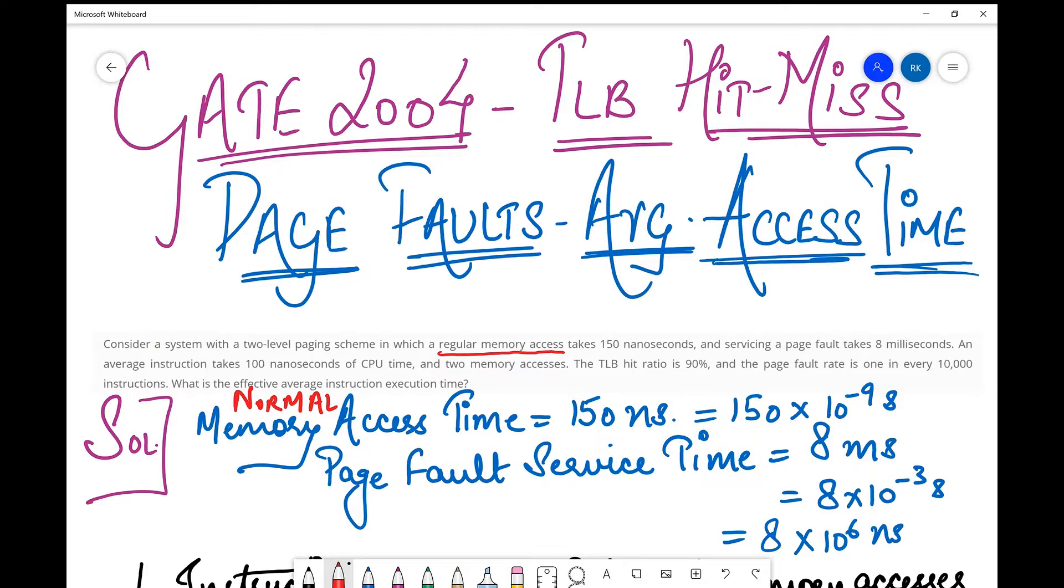This question deals with a variety of aspects of computer architecture. For example, it has the TLB hit-miss version, page faults, and an interesting twist between the normal scenario and the hit-miss scenario. To know this twist, you'll have to view my video. Let's dive into the question.